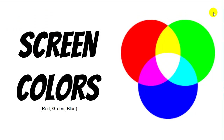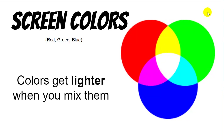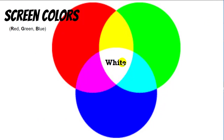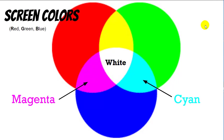The basic colors on a computer screen are red, green, and blue — not yellow. And when you mix colors together on the screen, they do not become darker, they become lighter. If you mix all the colors together, just think of a prism where the rainbow is going backwards — you'll get white. White is all colors mixed together. This pink sort of color is called magenta, and this blue sort of color is called cyan.